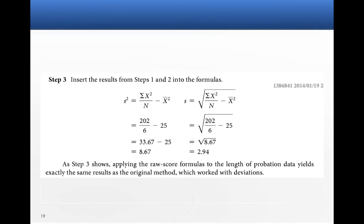Then we're going to plug it into the formula. So we're going to take the sum of x squared, which was 202, divided by 6, minus 25, and then take the square root. Notice it gets us the same number as it should.